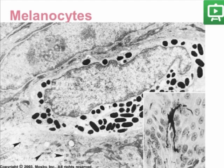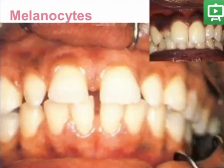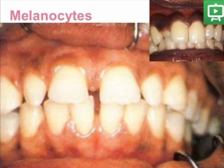Melanocytes produce melanin and transport it to keratinocytes, contributing to the color of the oral mucosa. This is seen clinically as racial pigmentation of the oral mucosa, mostly in dark-skinned individuals. It can be seen on the gingiva as well as on the buccal mucosa, the hard palate, and the tongue.